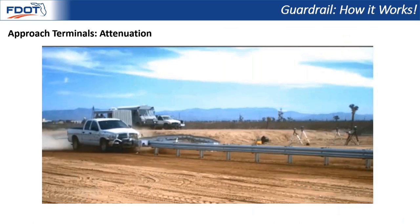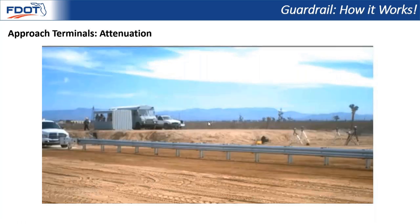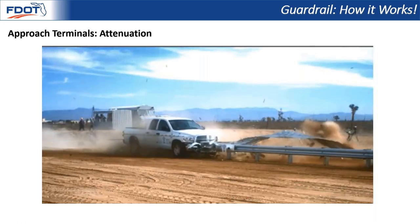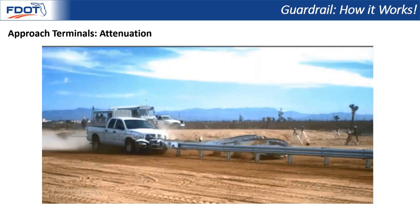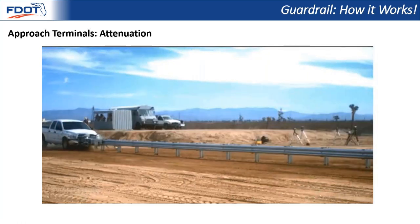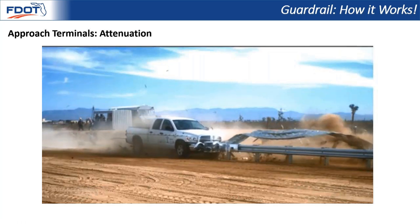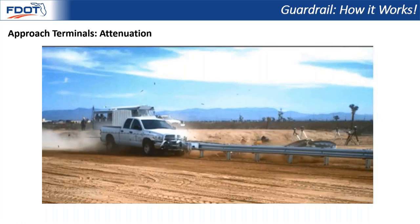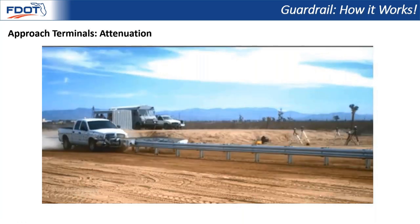Our guardrail approach terminals are proprietary systems with proprietary components. They're developed to provide some sort of attenuation when impacted by a vehicle. This particular system accomplishes that by extruding the W-beam panel through the extruder head — the impact head the vehicle comes in contact with. It has a chute inside that flattens and ribbons out the guardrail panels. Through the consumption of energy from the impacting vehicle, it attenuates and brings the vehicle to a more controlled stop. More importantly, it keeps the face or end of the guardrail panel pushed away from the impacting vehicle so it doesn't become a spearing or penetration hazard.